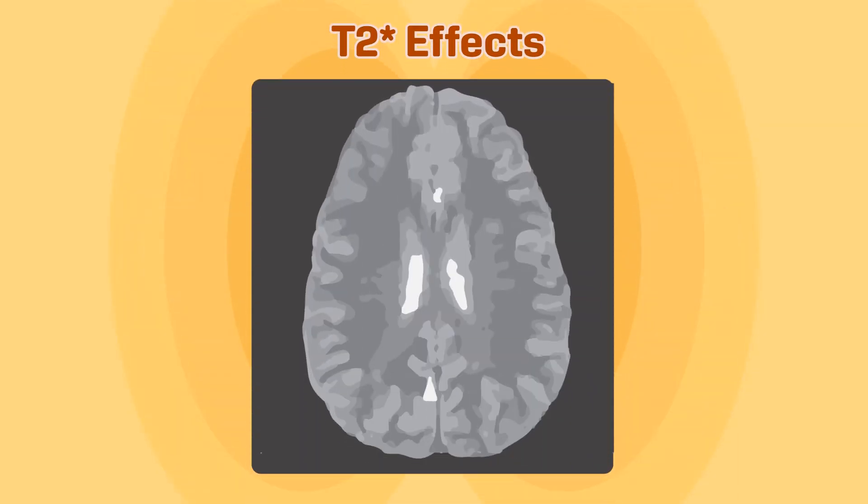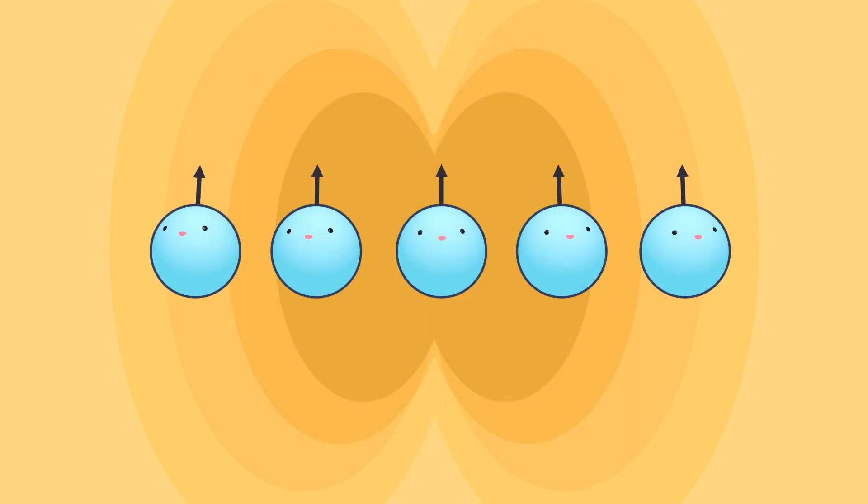On MR imaging, these T2 star effects can appear as diffuse loss of signal, or black holes, in areas where the magnetic field is particularly distorted. Because these effects are due to an inhomogeneous magnetic field, we can liken them to distractions in a child's environment.